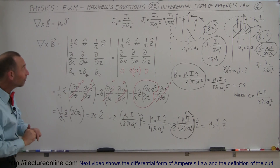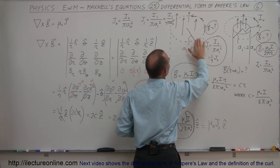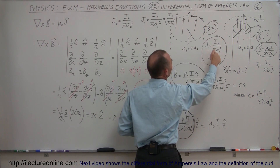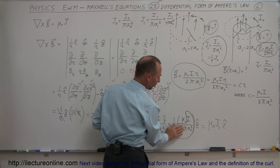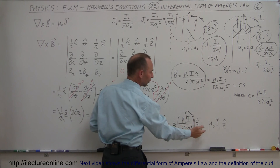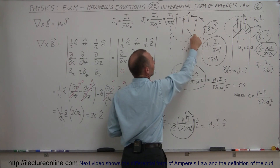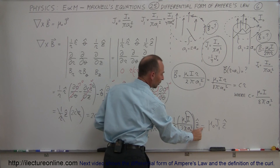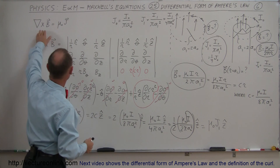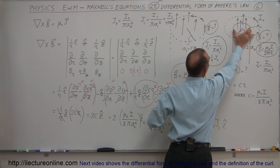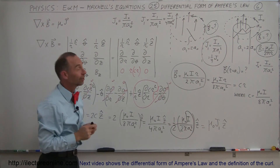We tried to find the B-field at a location outside the current region by assuming the current was spread over the entire wider region, giving a new current density J₁, which is one-quarter of J₀. By replacing the expression with J₁, we've shown that the curl of the B-field at twice the original radius equals mu-naught times J₁ — the current density spread over the entire region. That's how you apply the differential form of Ampere's Law: take the current in the inner cylinder and spread it evenly over the larger cylinder to find the B-field at the edge of that cylinder.